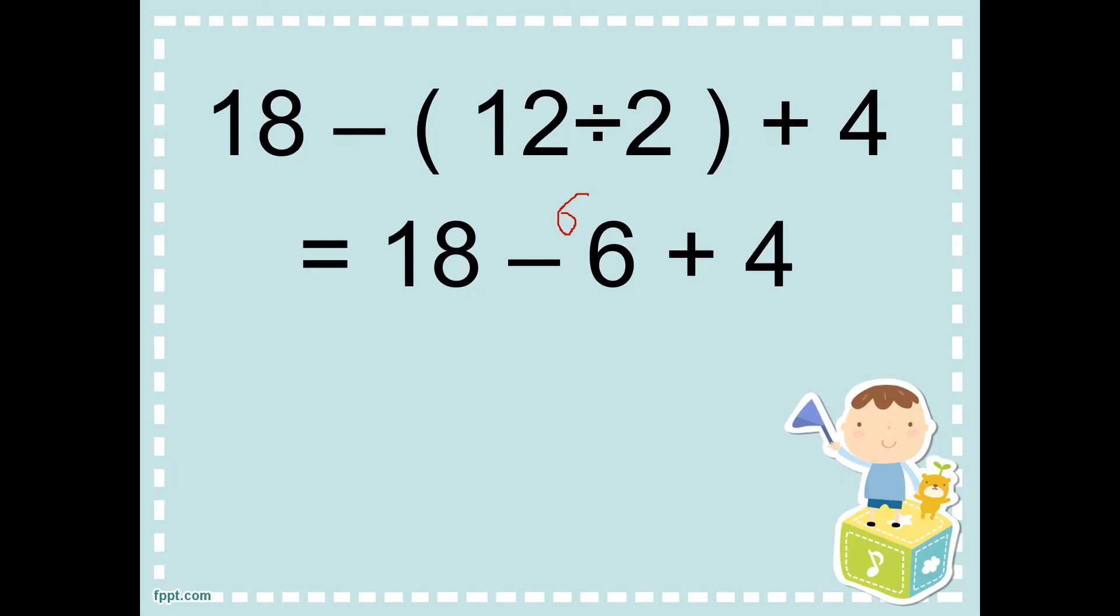Following the PEMDAS rule, for subtraction or addition, subtraction comes first. So, first, eighteen minus six equals twelve. Then, twelve plus four equals sixteen. So, the answer is sixteen.